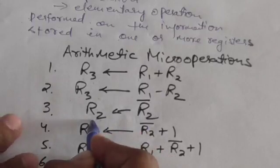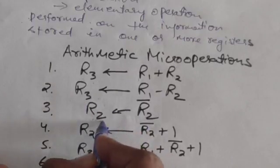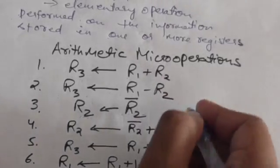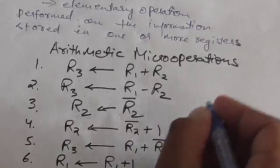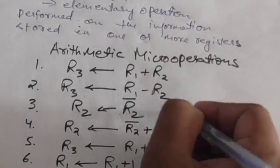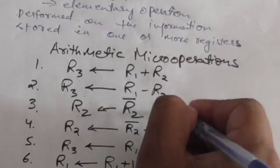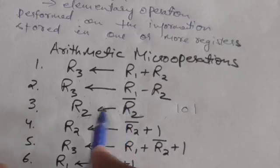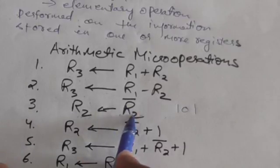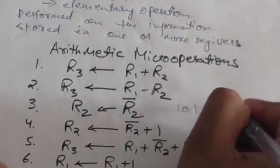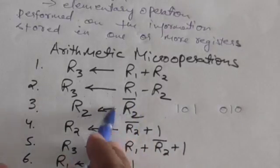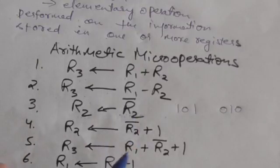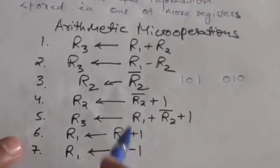This third statement represents a micro operation in which the content of register R2 is replaced by its one's complement. For example, suppose the content stored in register R2 is 101. After this micro operation, the content of register R2 will be 010 — the one's complement of the original value.